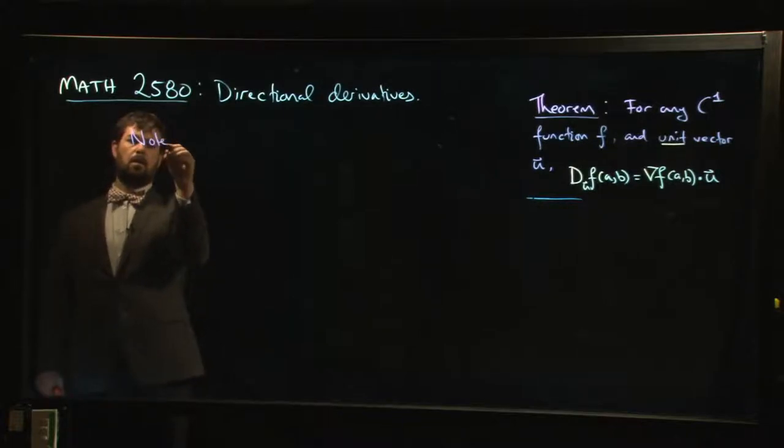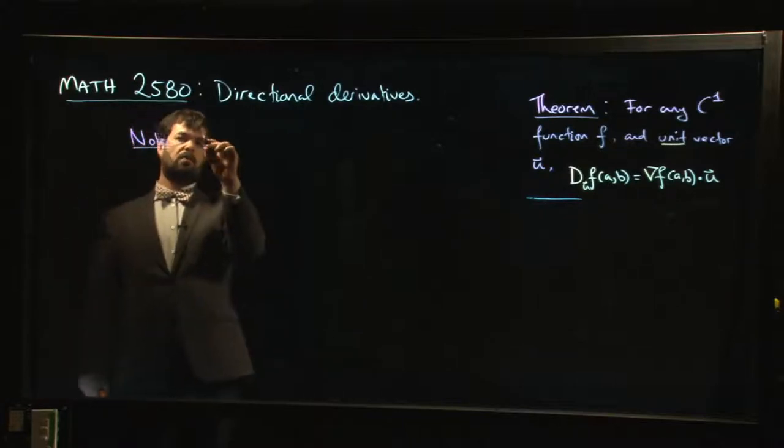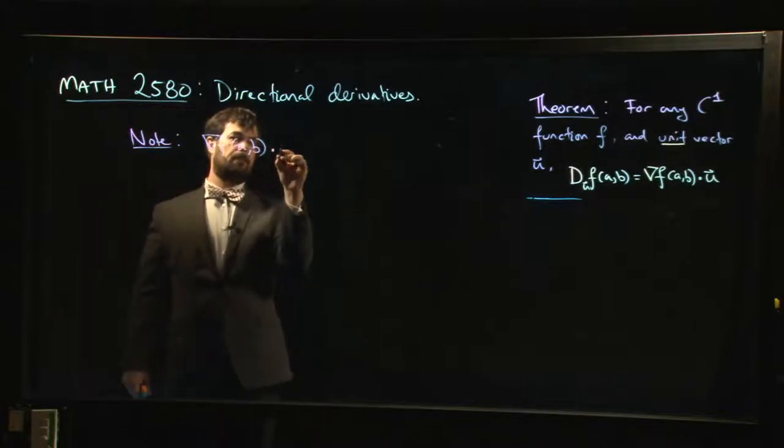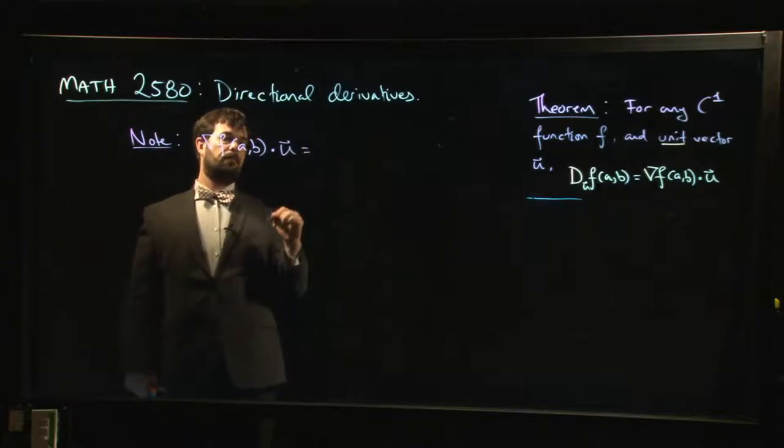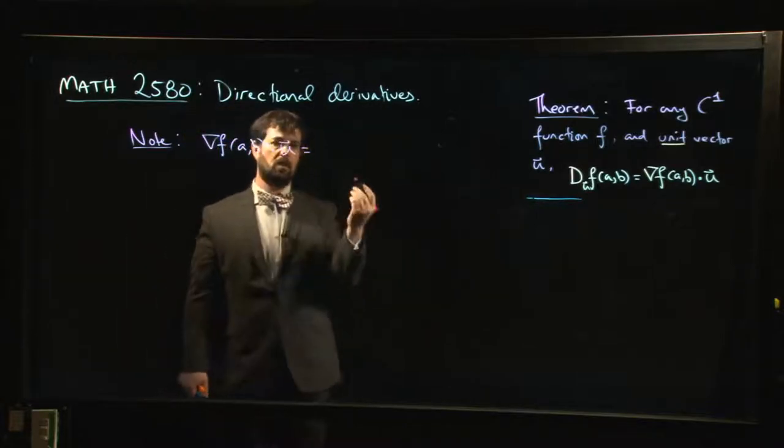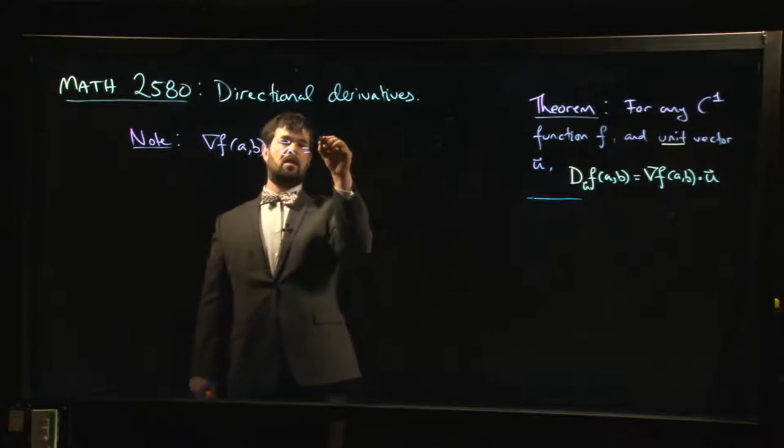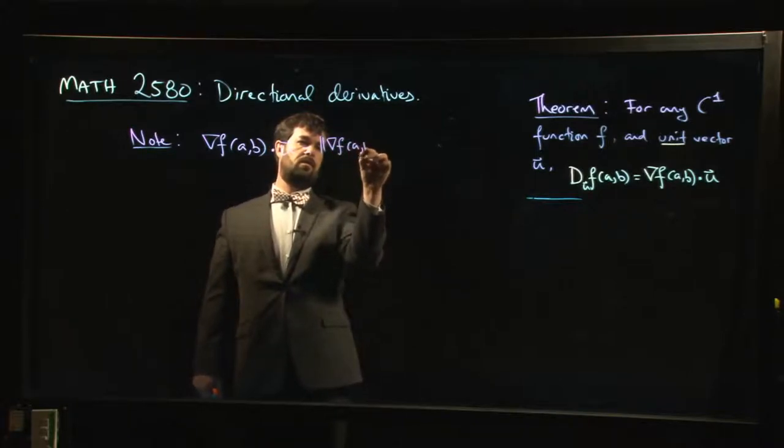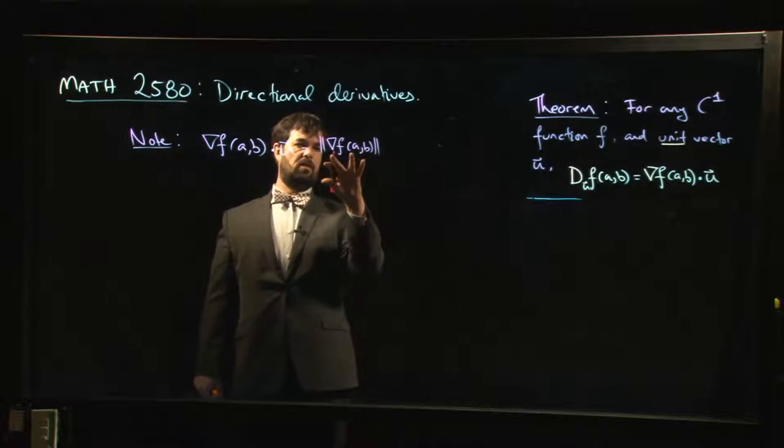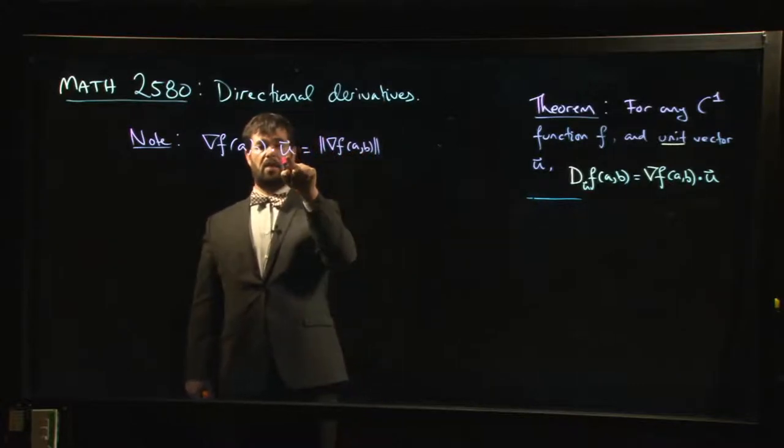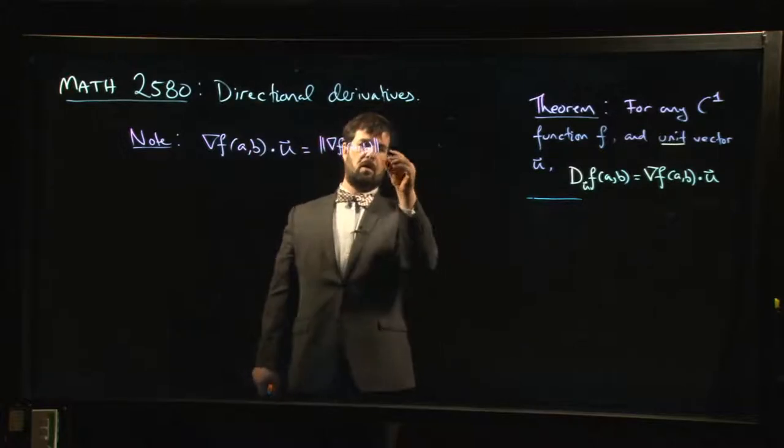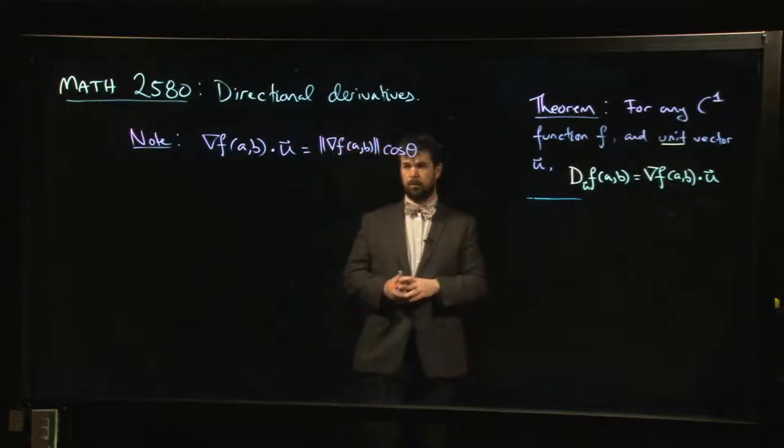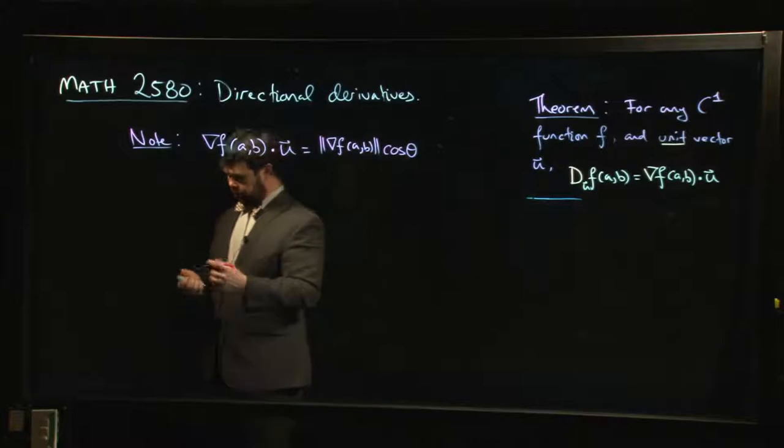In particular, what is the significance of the gradient vector? What information is contained in that gradient vector? One of the things that we'll note is that the directional derivative is given by that dot product, the gradient at a point dotted with the unit vector.